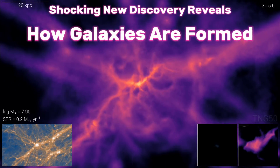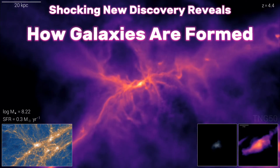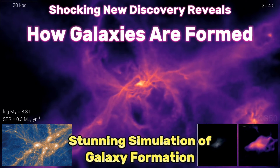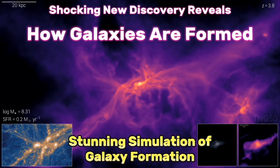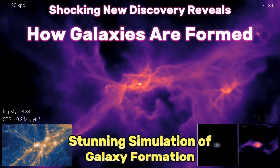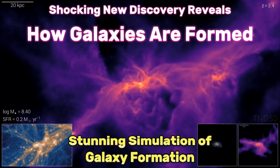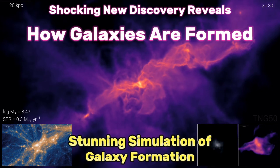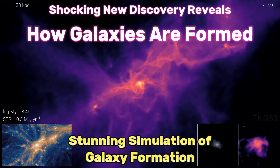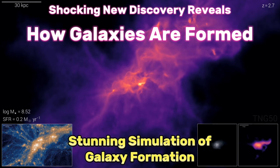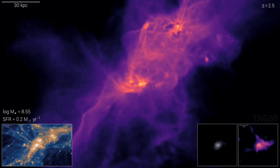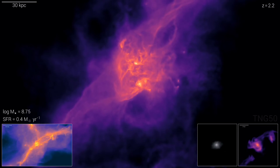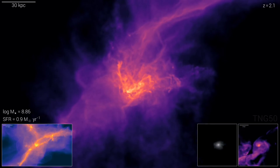TNG50 covers a volume of 50 megaparsecs on a side, which is about 163 million light-years, with a resolution of 0.5 kiloparsecs — about 1,600 light-years — meaning it can resolve individual star-forming regions within galaxies. Each simulation starts from the initial conditions of the early universe based on observations from the cosmic microwave background radiation, then evolves forward in time using physical laws and equations that describe how matter behaves under different forces and conditions.